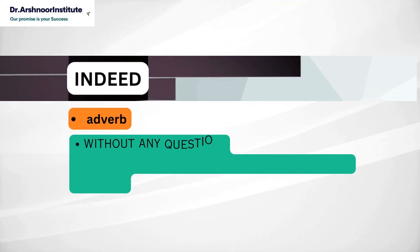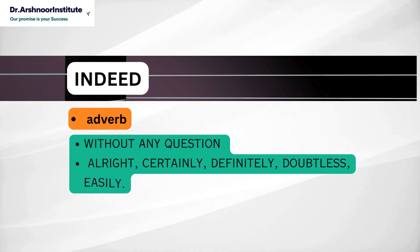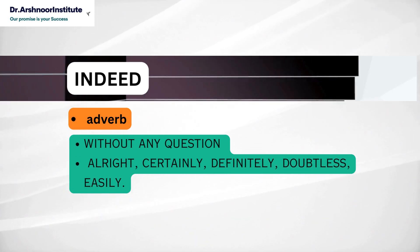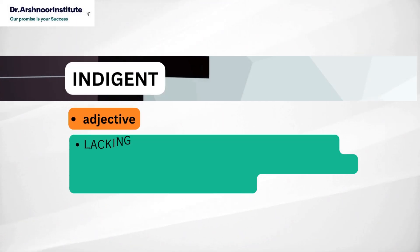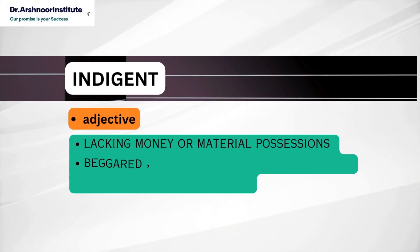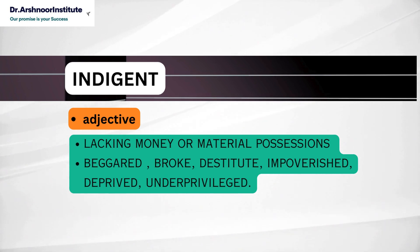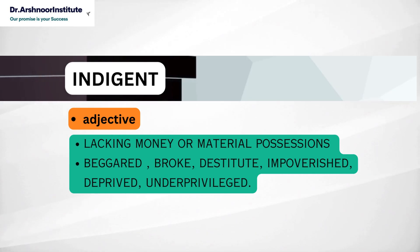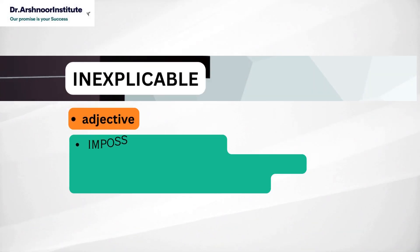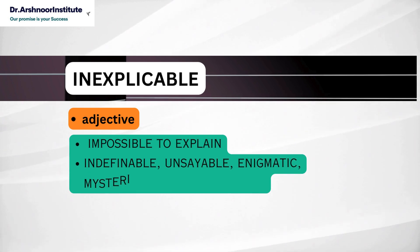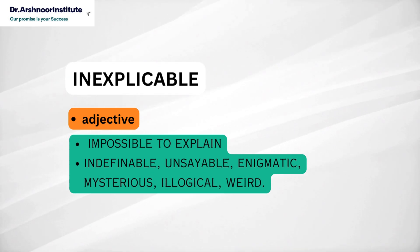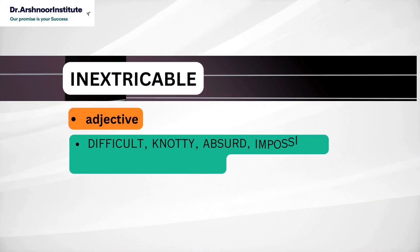Next word is indeed. It's an adverb and it means without any question and the synonyms are all right, certainly, definitely, doubtless, easily. Next word is indigent. It is an adjective and it means lacking money or material possessions and its synonyms are beggared, broke, destitute, impoverished, deprived, underprivileged. Next word is inexplicable and it's an adjective. It means impossible to explain and its synonyms are indefinable, unsayable, enigmatic, mysterious, illogical, weird.